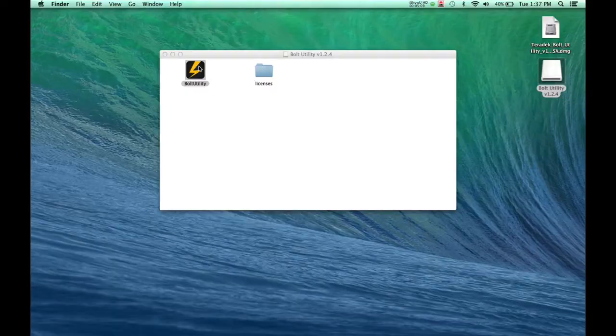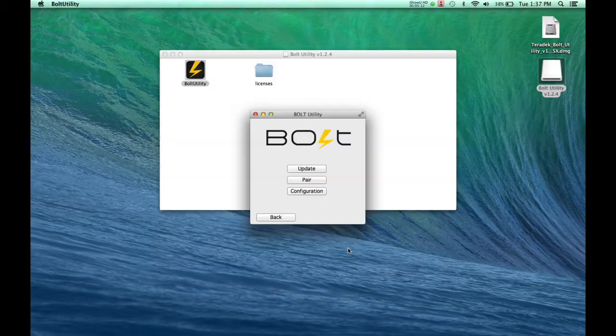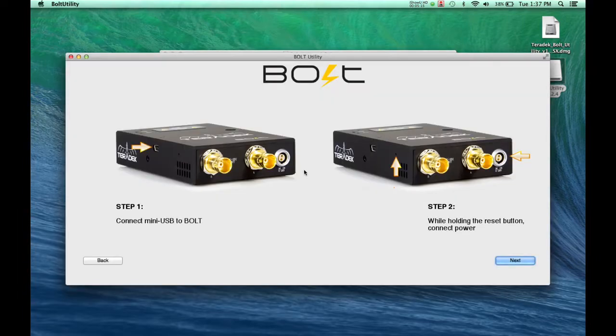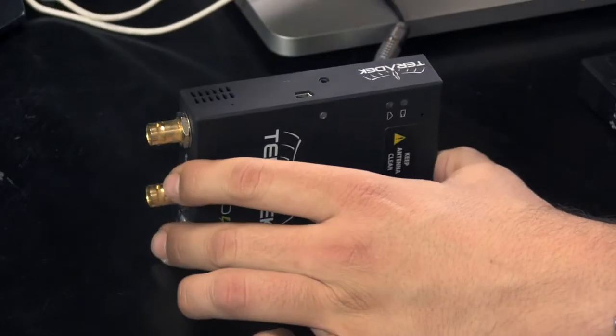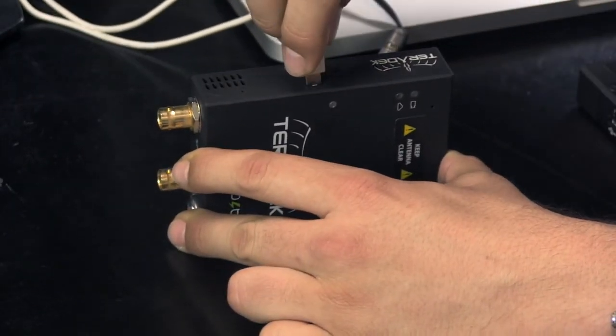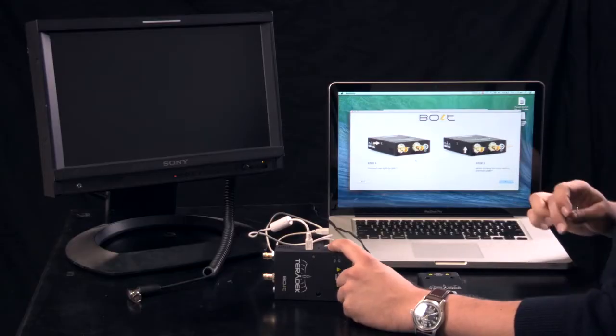Now, let's update the Bolt receiver. Run the application. Select your receiver type. Connect the mini USB to Bolt. While holding the reset button, connect power.